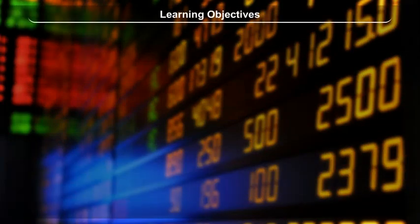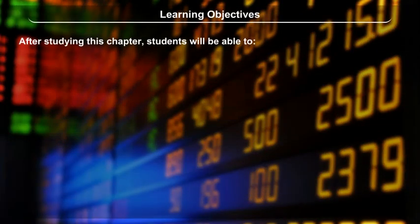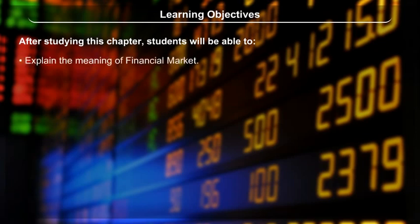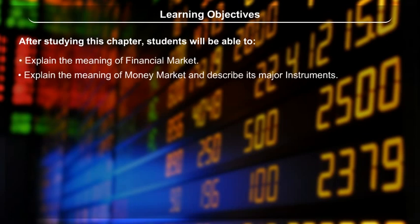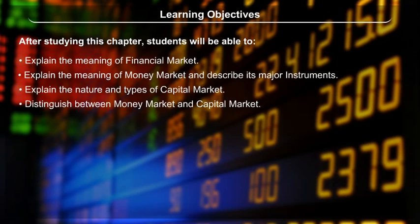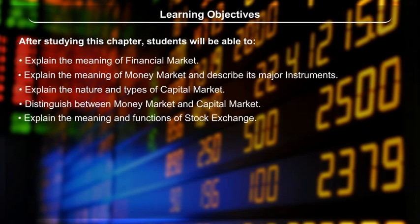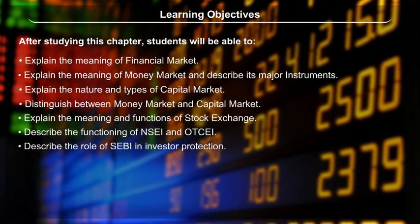Learning Objectives: After studying this chapter, students will be able to explain the meaning of financial market, explain the meaning of money market and describe its major instruments, explain the nature and types of capital market, distinguish between money market and capital market, explain the meaning and functions of stock exchange, describe the functioning of NSEI and OTCEI, and describe the role of SEBI in investor protection.